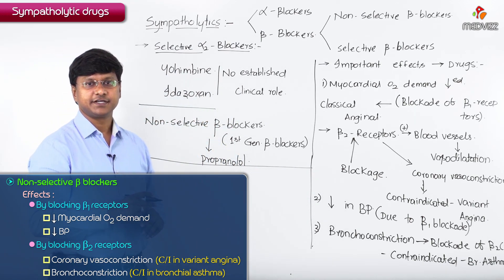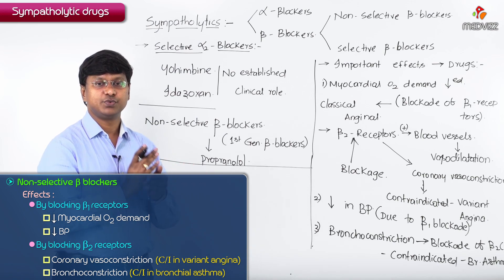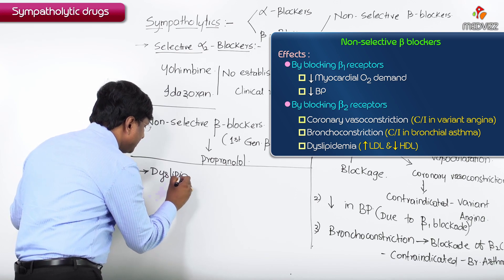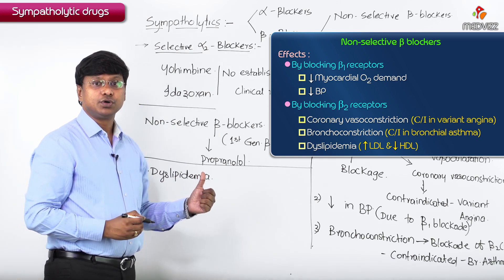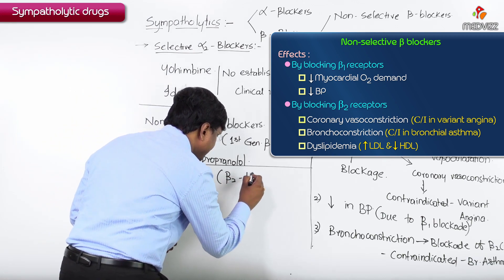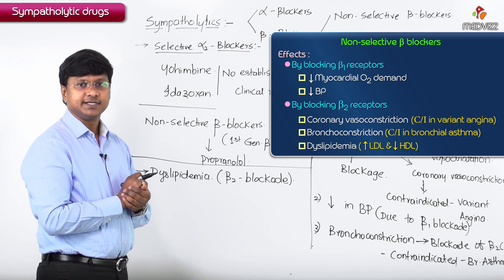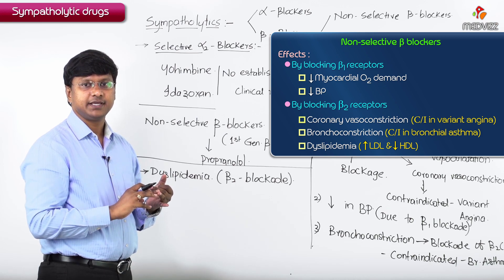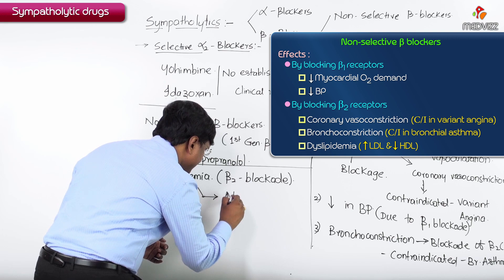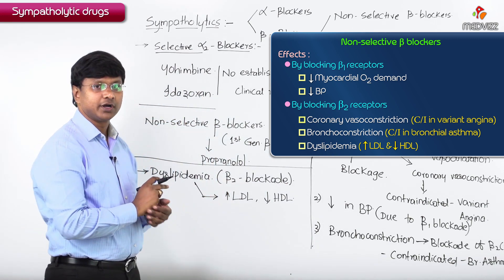Non-selective beta blockers also affect lipid metabolism. They cause dyslipidemia due to beta 2 blockade. This dyslipidemia is characterized by an increase in LDL and a decrease in HDL.